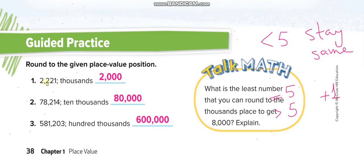Next question: 2,221 rounded to the nearest thousand. Where is the thousands place? It's the digit 2 in the thousands position. We circle that 2, then check the next digit — it is less than 5, so the 2 stays the same and the remaining digits become zeros: 2,000.